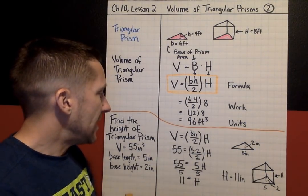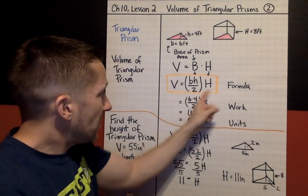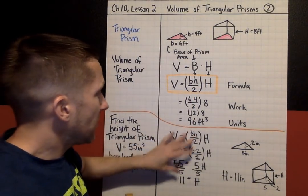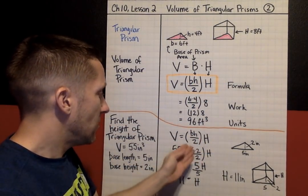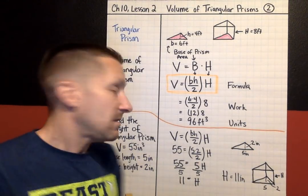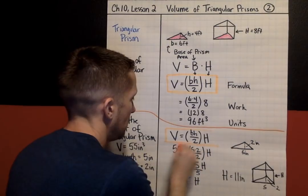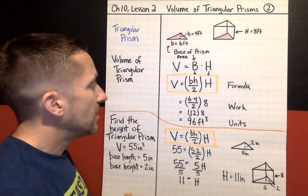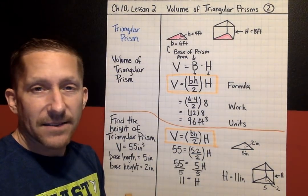Alright, looks pretty complicated, but the big idea is this: using this formula, always start by writing down the formula, plug in what you know, go back to your notes for help, and always — formula, work, units. You're going to hear me saying that over and over this chapter. Formula, work, units. That wraps it up for Lesson 2. I will see you again soon for Chapter 10, Lesson 3.